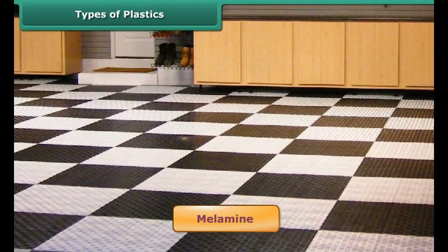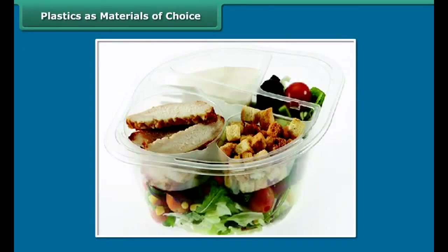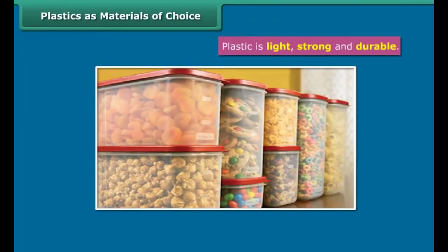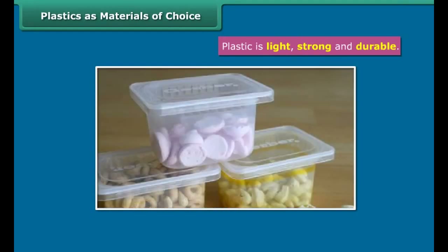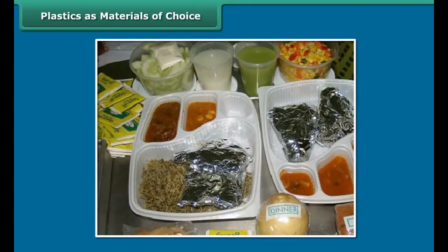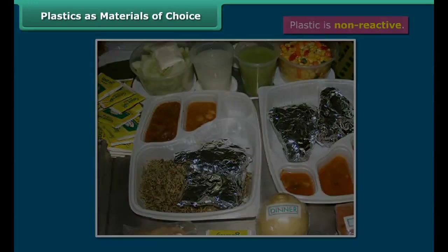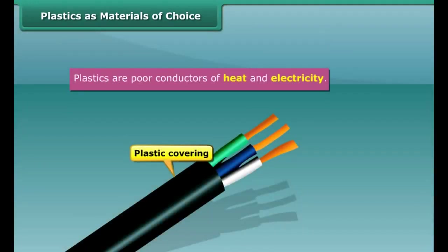Bakelite and melamine are two examples of thermosetting plastics. The familiar electrical switches and handles of utensils are made of bakelite, as it is a poor conductor of heat and electricity. Melamine is used for making floor tiles, kitchenware and certain fabrics, as it is fire resistant.